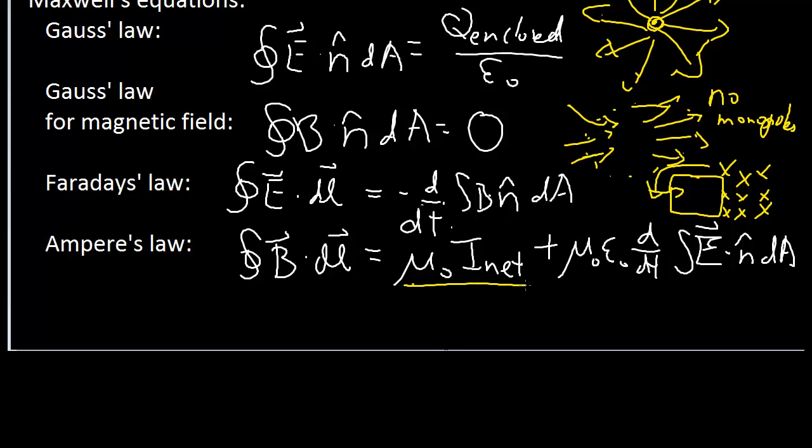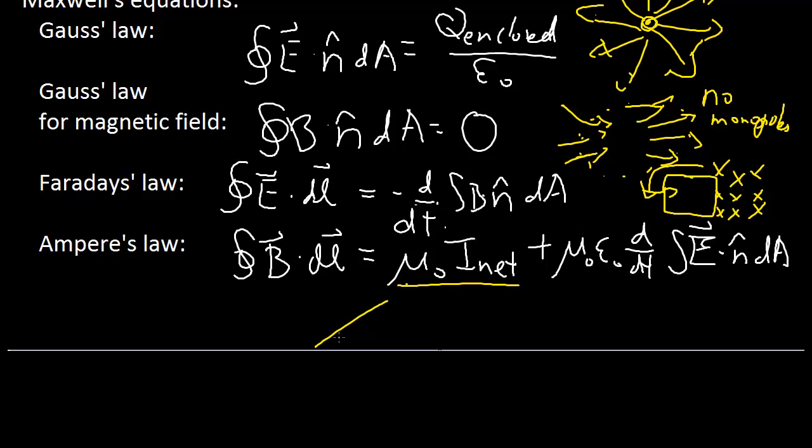And then you have Ampere's law, which the first part is just talking about if you have a wire, you're going to create some kind of magnetic field around a loop. And then the second part comes about when you consider a capacitor being charged up, that while you have magnetic field here due to current, and magnetic field here due to the current, here you also have magnetic field, but there's no current because it's an open plate. But, the electric field is changing, so this is the last piece of the puzzle where you have changing electric field gives you changing magnetic field.